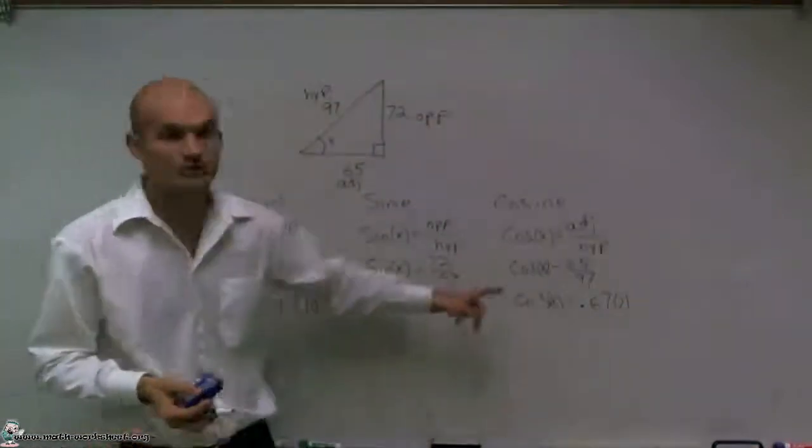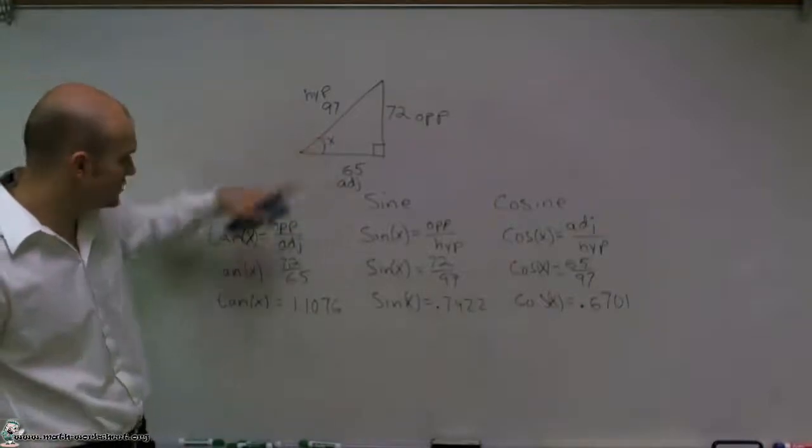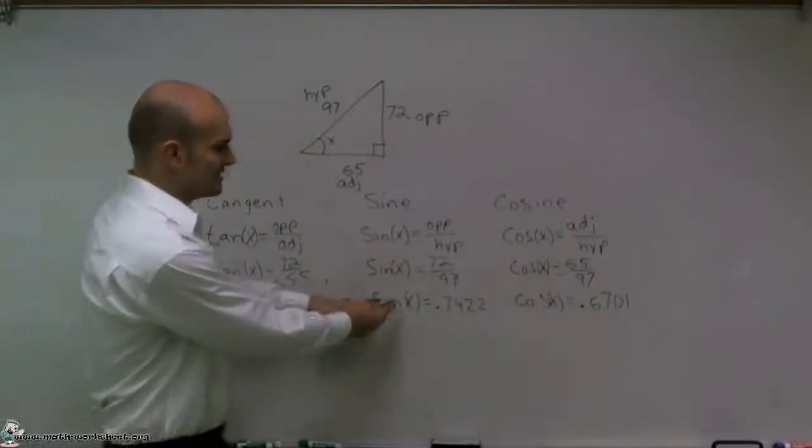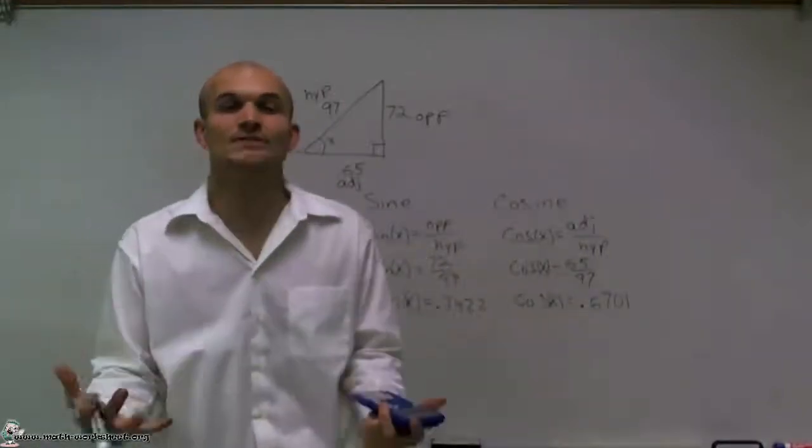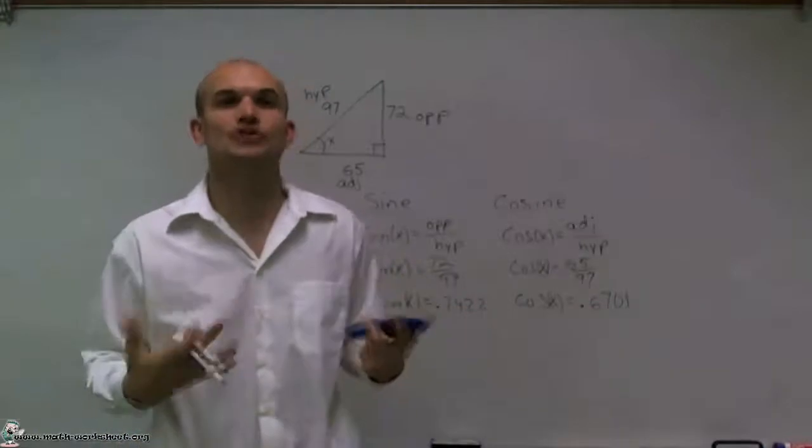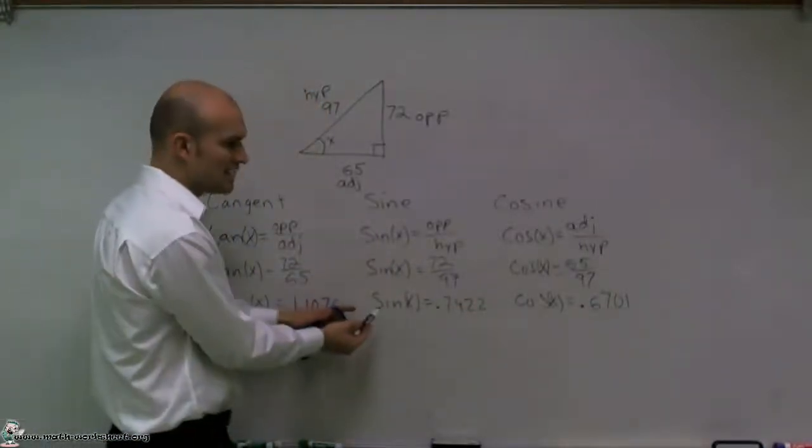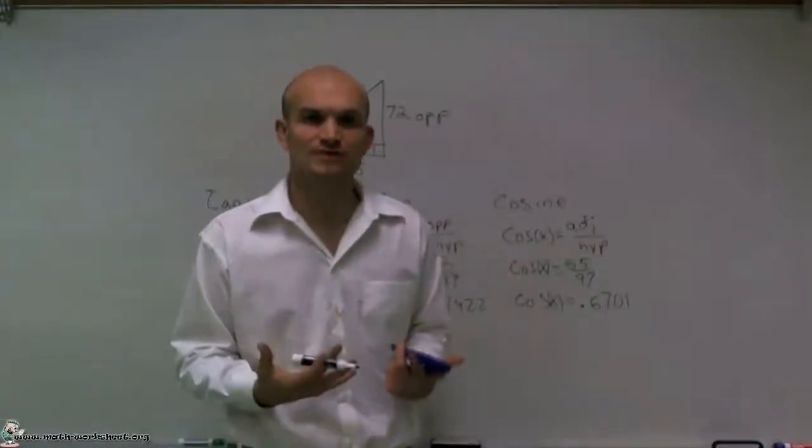Notice my ratios are all different. But remember, we want to find the value of x. Right now we're taking the tangent of x, the sine of x, or the cosine of x. To find exactly what the value of x is, I need to undo my functions - undo the tangent function, undo the sine function, undo the cosine function.